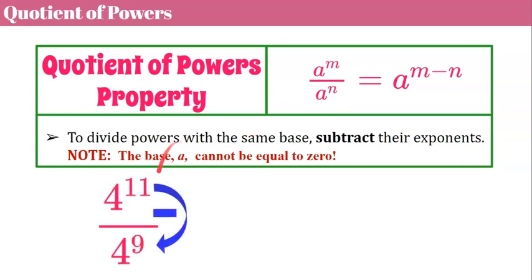Here's an example. Four to the eleventh divided by four to the ninth. We're going to subtract our exponents. So we could rewrite it to be four with an exponent of eleven subtract nine. Eleven subtract nine is two and four squared is sixteen.